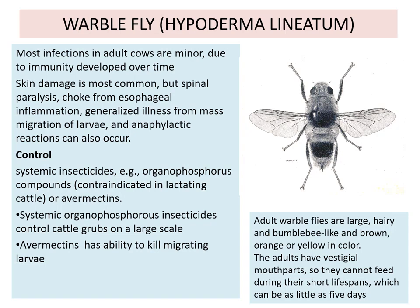Regarding control of the warble fly, systematic insecticides like organophosphorus compounds are used. Systematic organophosphorus insecticides control cattle grubs on a large scale. Avermectins have the ability to kill the migrating larvae. Essentially, the insecticide used is avermectins for the warble fly.